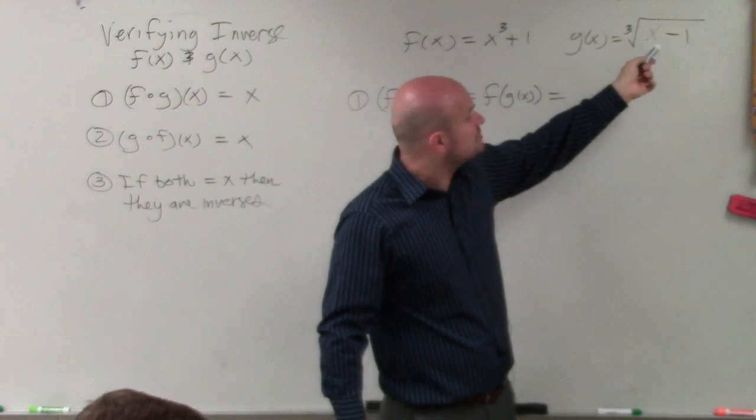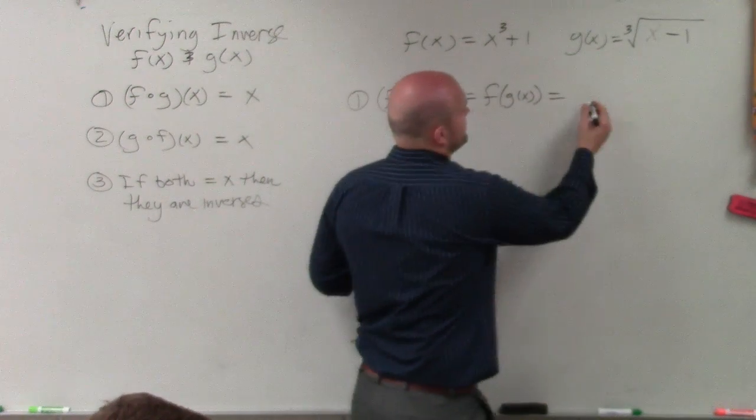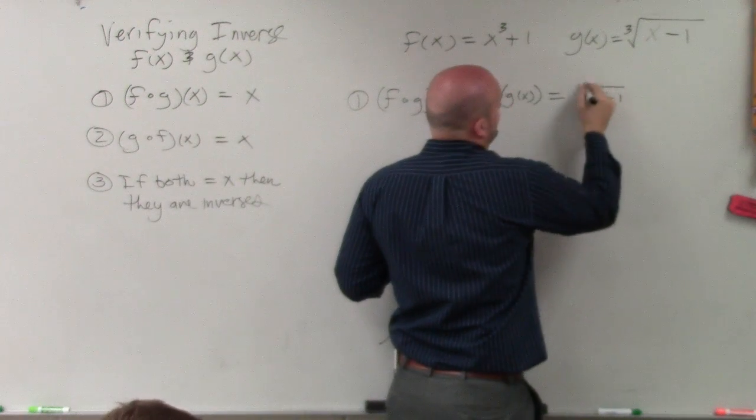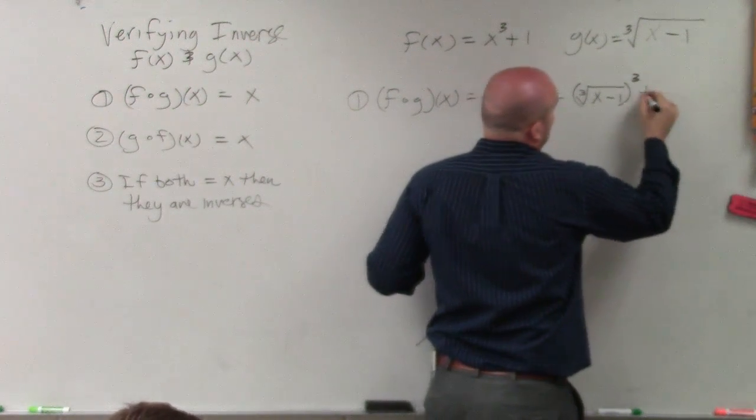Instead of writing g of x, g of x is the cube root of x minus 1. So basically, I have cube root of x minus 1 being cubed plus 1. Does everybody see that?